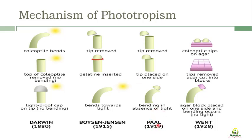Paal in 1919 also carried out an experiment. He removed the tip of the oat coleoptile and placed it on one side of the plant and not the other. Bending occurred even in the absence of light. He concluded that there is a chemical - a signaling molecule - made in the tip of the plant, and when this tip is placed on one side, the chemical is transported to the lower part of the plant and bending response can be seen.